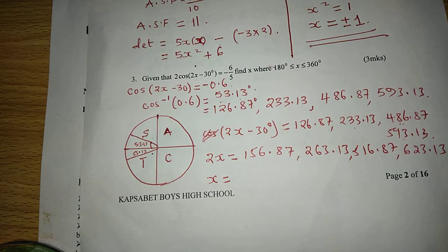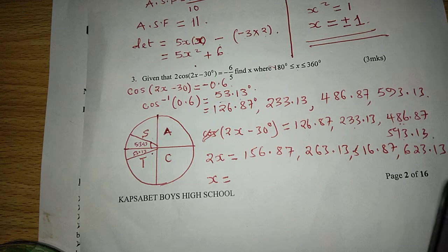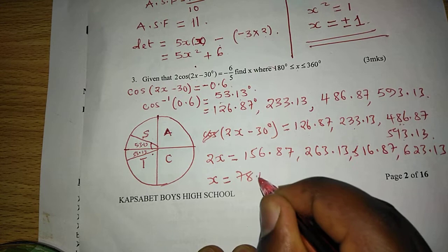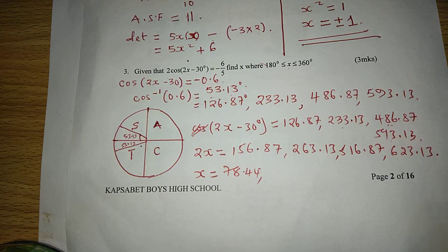So now, to remain with x, we can divide it through by 2, because we have 2x. 156.87 over 2, which gives us 78.44. The next one will be 263.13 divided by 2, it becomes 131.57.